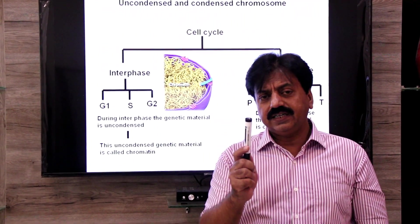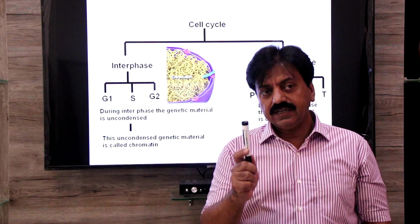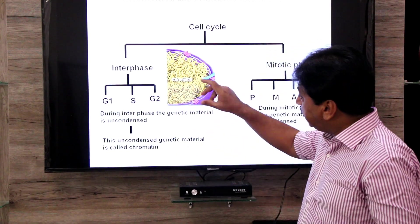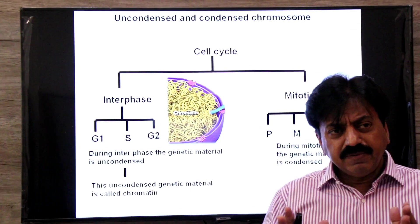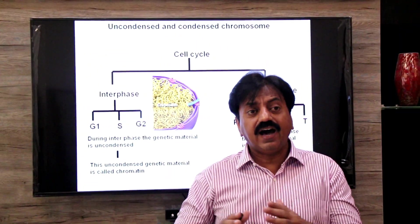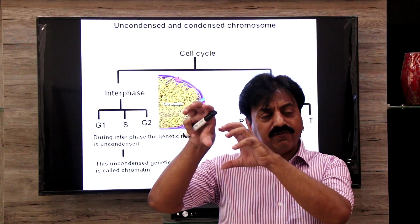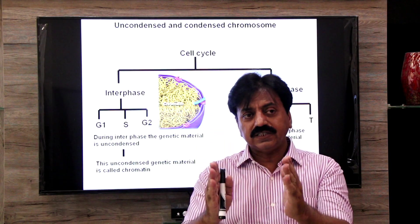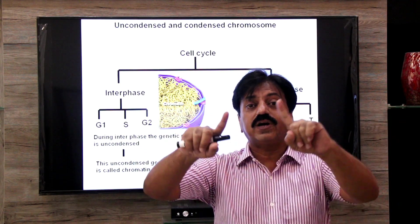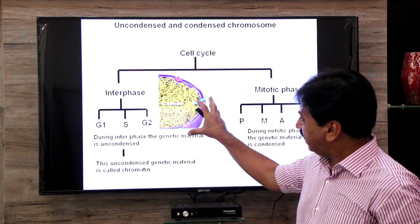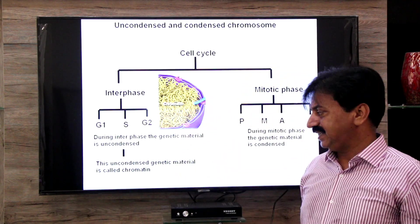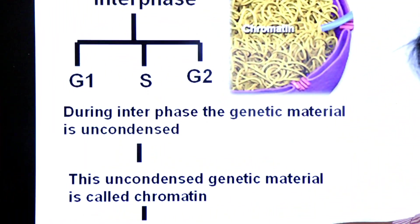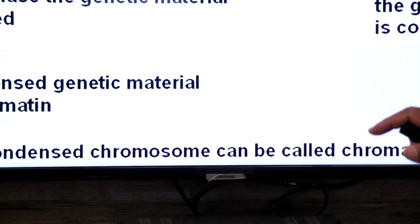A single DNA molecule makes a single chromosome. This is a very important point: an uncondensed chromosome can be called chromatin.